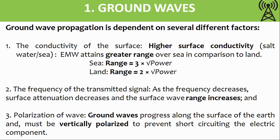Range over sea is three times the square root of power, whereas the range over land is just two times the square root of power. As frequency increases, surface attenuation increases and the surface wave range decreases. It is effectively non-existent above high frequency.